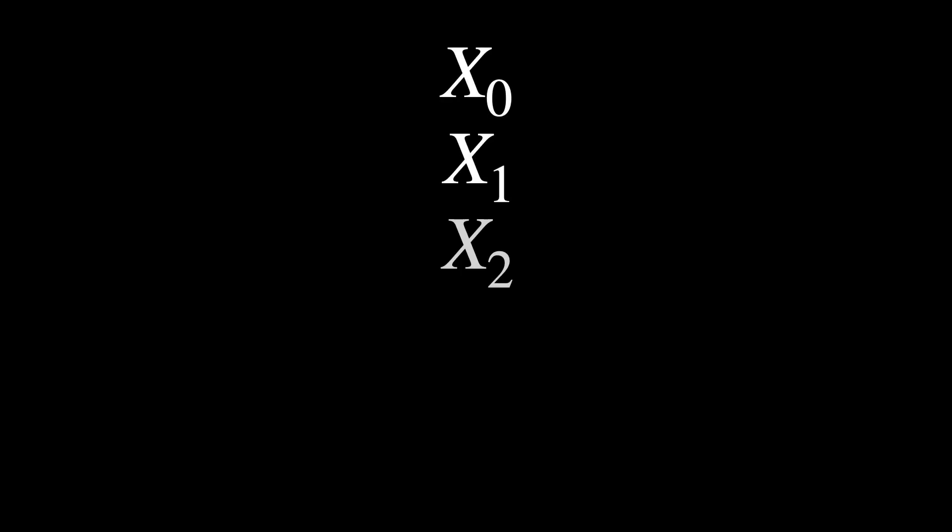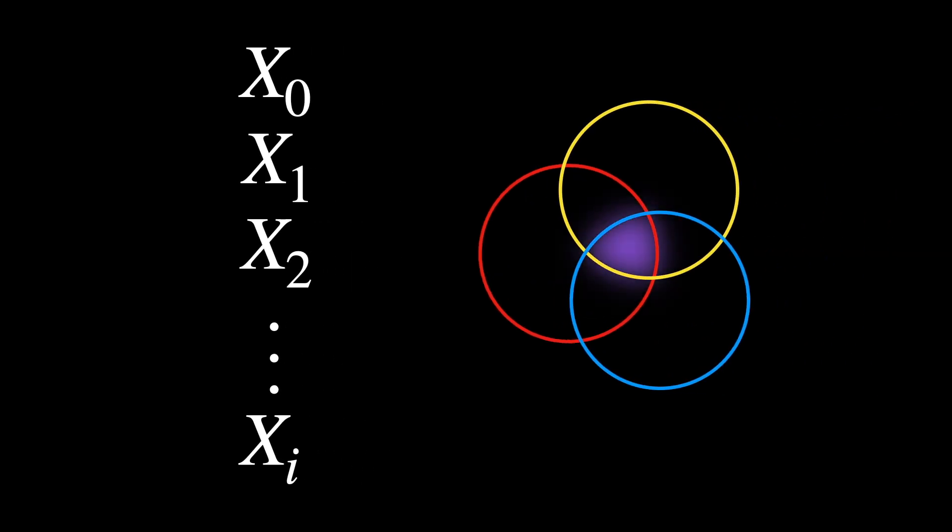Once the sequence x0, x1, x2, and so on is produced, you define the Cantor set to be the intersection of all the x_i. That is, all the real numbers that remain, no matter how far you go in this process of removing the middle thirds.